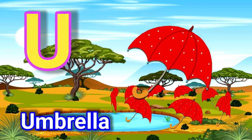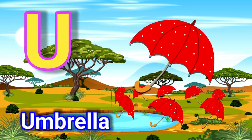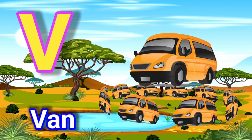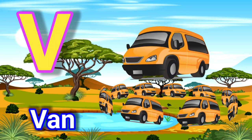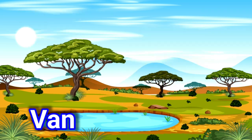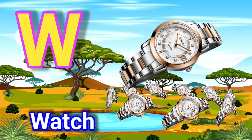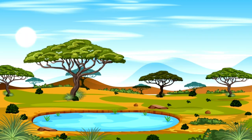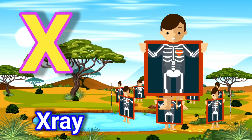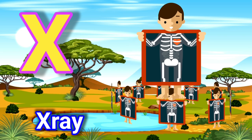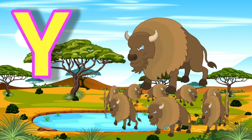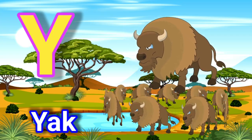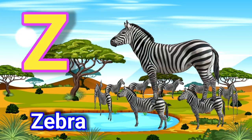U for umbrella, V for bean, W for watch, X for x-ray, Y for yak, Z for zebra.